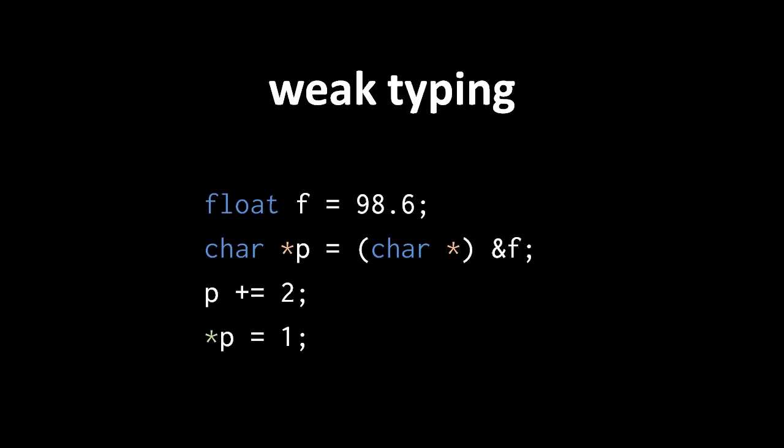In a strongly typed language, I should only be able to manipulate a piece of data with operations expressly defined for that type, but here we're using pointers to do an end run around the normal float operations. Arbitrarily munging a random byte of a float makes no sense as far as the float type is defined, but C lets us do this because it is weakly typed. In C, it's the programmer's responsibility to preserve the sanctity of the data types, not the language's responsibility.